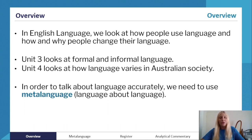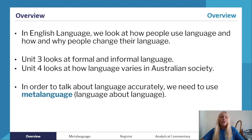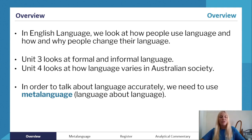We'll begin with an overview of English Language. In this subject overall we're looking at how people use language and how and why people change their language. Unit 3 covers formal and informal language, and Unit 4 looks at how language varies in Australian society. We need to use meta language — this is an expectation of the subject. It is quite difficult because there are so many terms you need to remember and apply, and you never know what is going to come up.